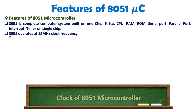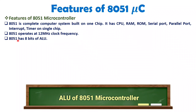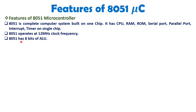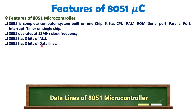The 8051 operates at a speed of 12 MHz. For that, we connect a crystal oscillator, which provides the crystal clock for the 8051 to operate at 12 MHz. The 8051 has an 8-bit ALU, so in a single machine cycle it can perform 8-bit arithmetic and logical tasks using the on-chip 8-bit ALU. The 8051 also has 8 data lines.